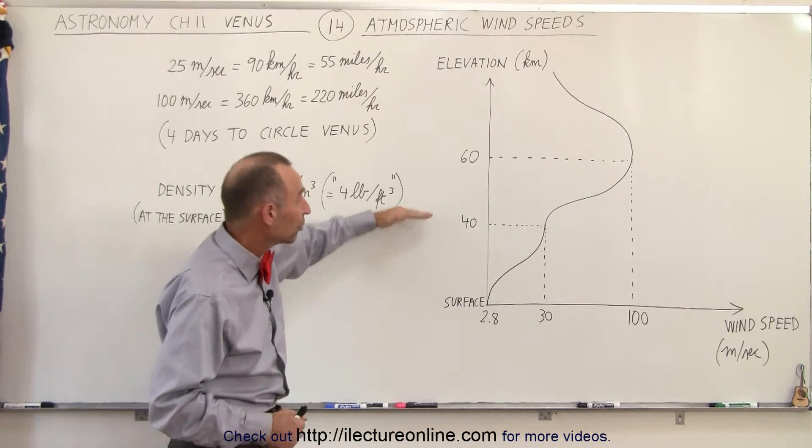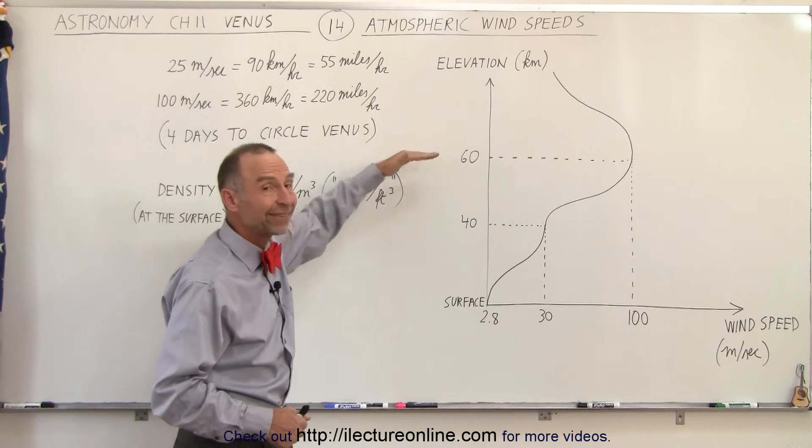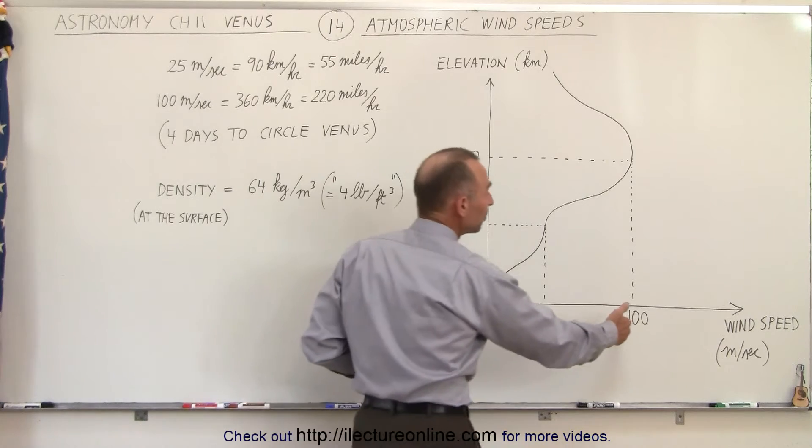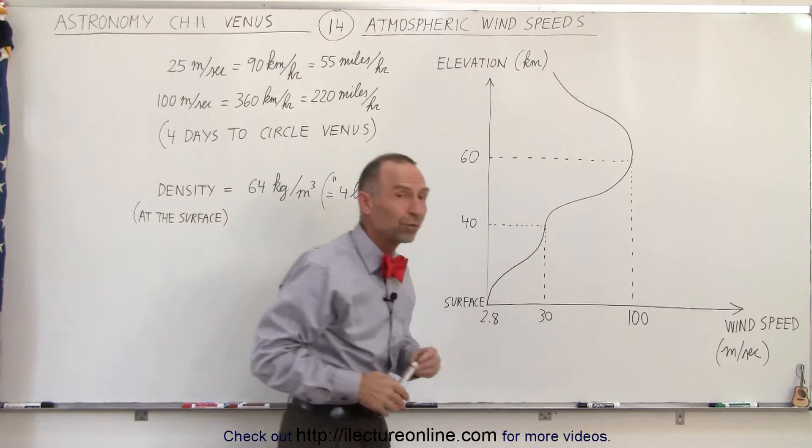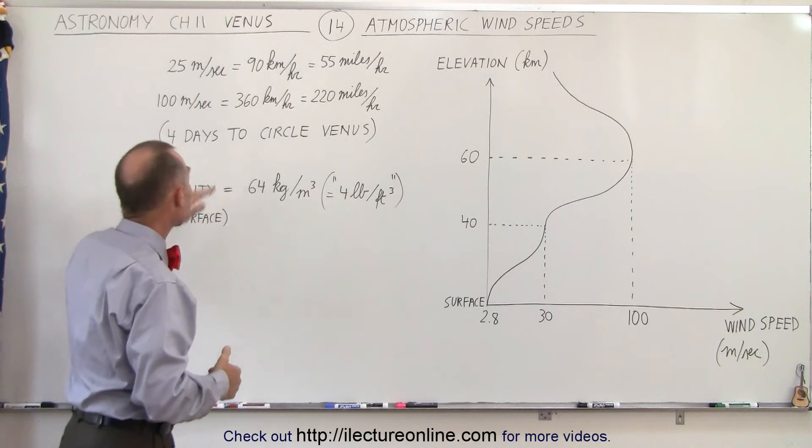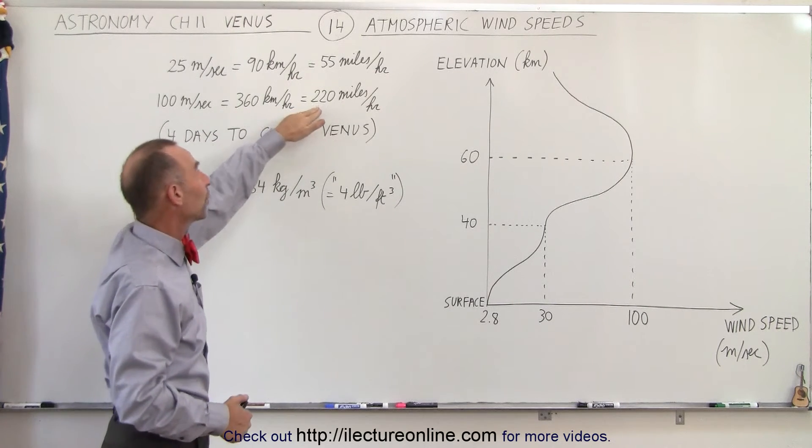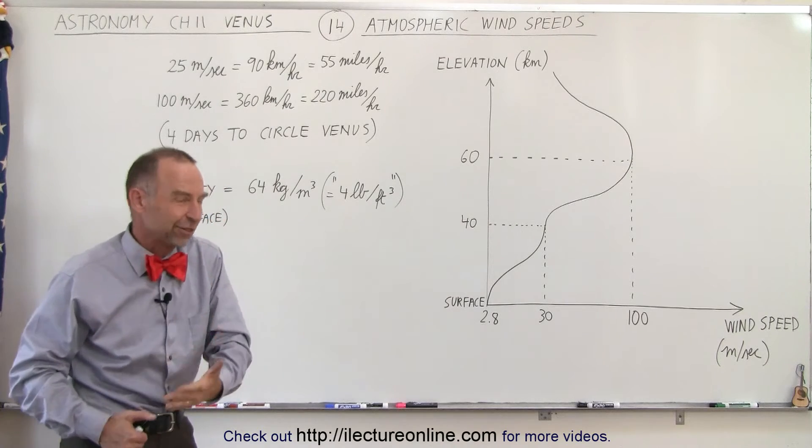But then, if you continue to go up and you reach a height of about 60 kilometers, roughly 40 miles up, then the wind speeds move at about a hundred meters per second. Now a hundred meters per second is 360 kilometers per hour or 220 miles per hour - that's even faster than bullet trains.